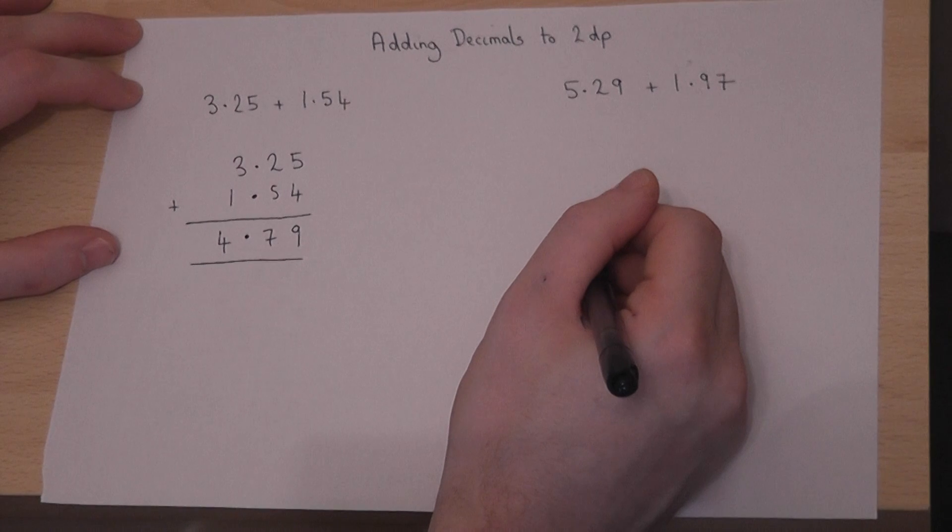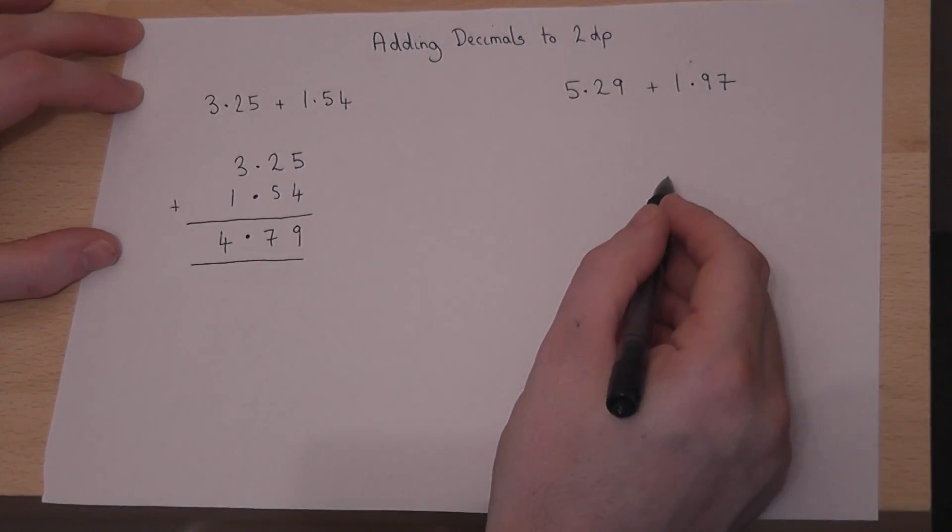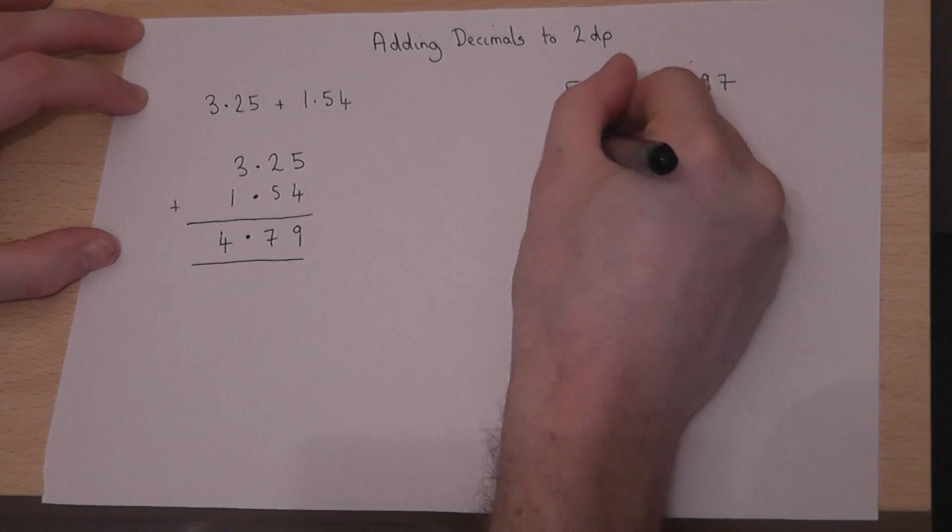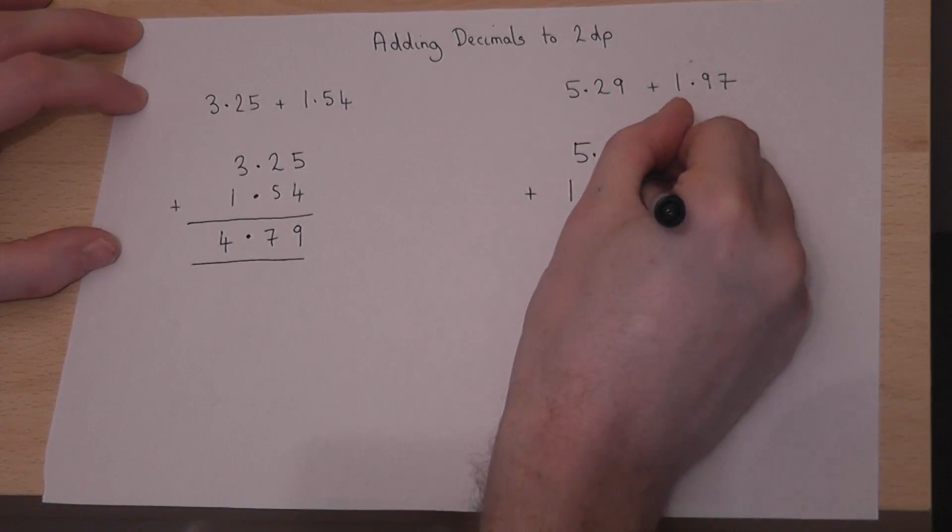So that was really rather easy. Let's adapt this now for the second example. So 5.29 plus 1.97.